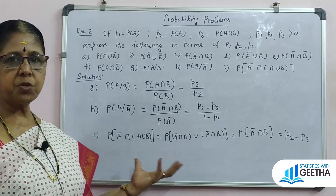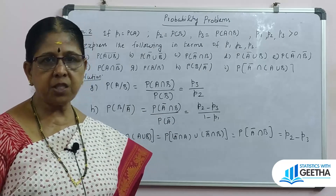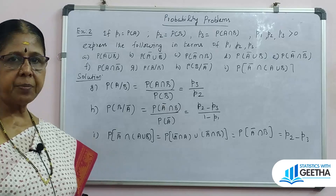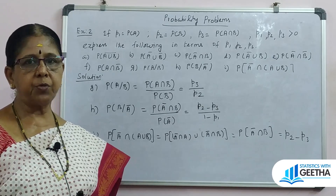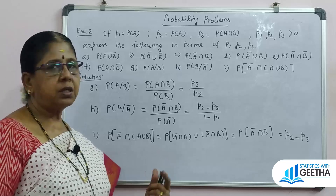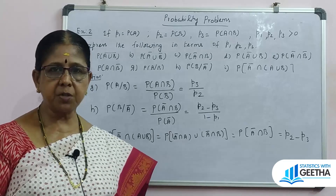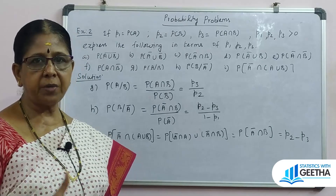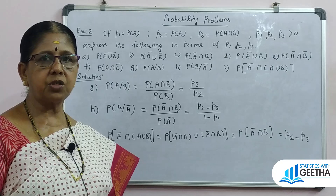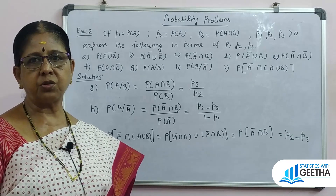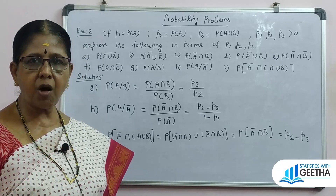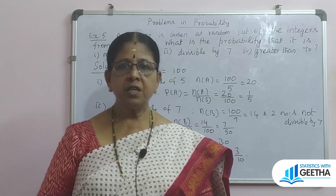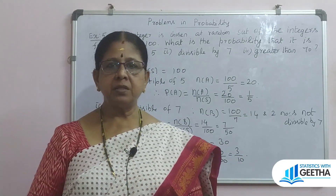We used expressions, terminology, and various terms throughout. Notes are available in the description. These are important probability terminologies and expressions to use in De Morgan's law problems. Please use the terminology correctly. If you found this helpful, please comment, share, and subscribe. Thank you.